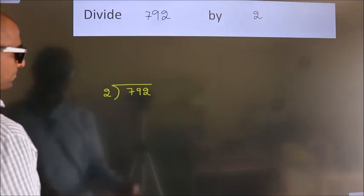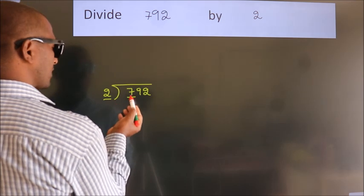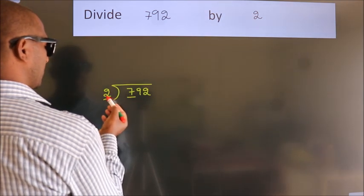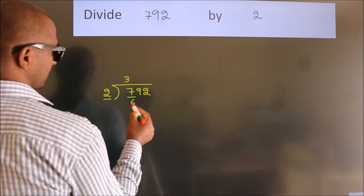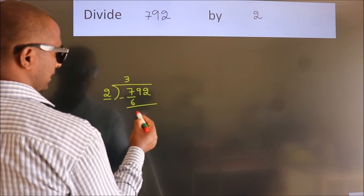Next, here we have 7, here 2. A number close to 7 in the 2 table is 2 threes, 6. Now we should subtract. We get 1.